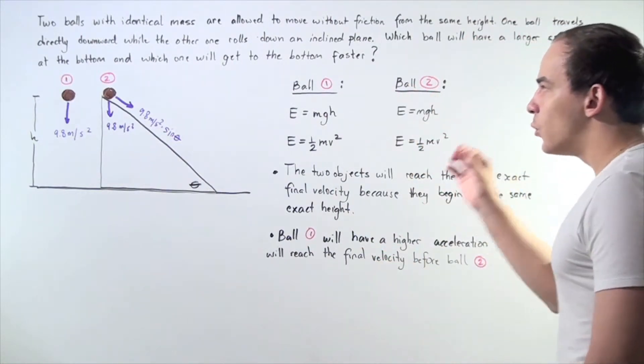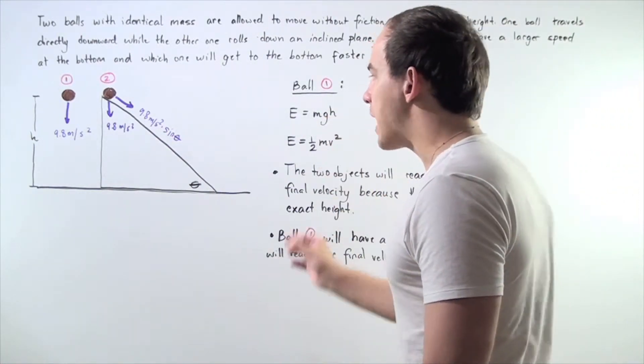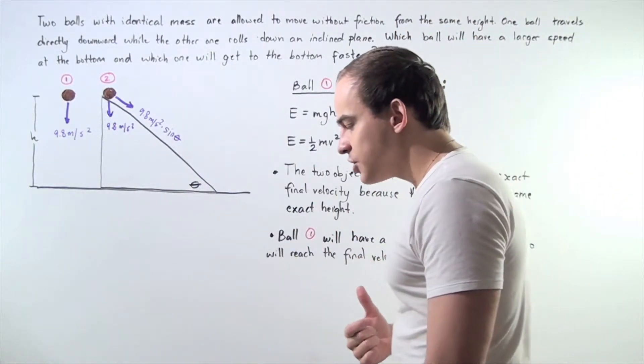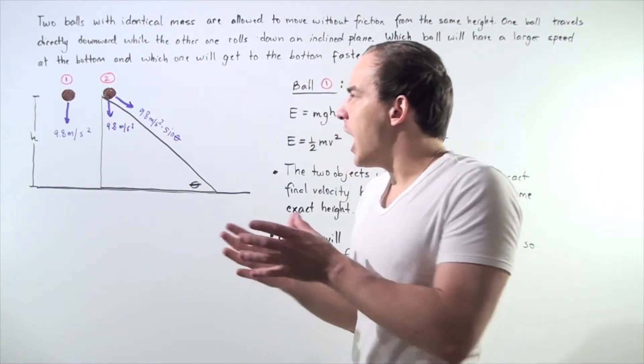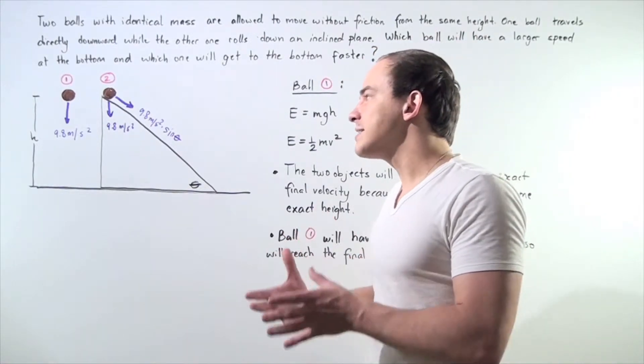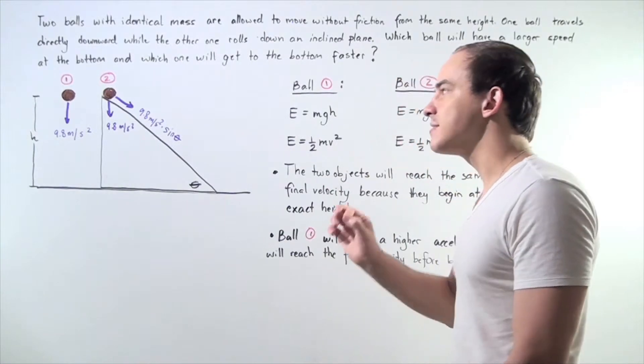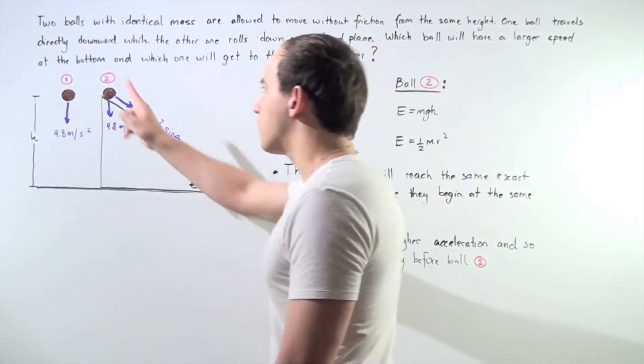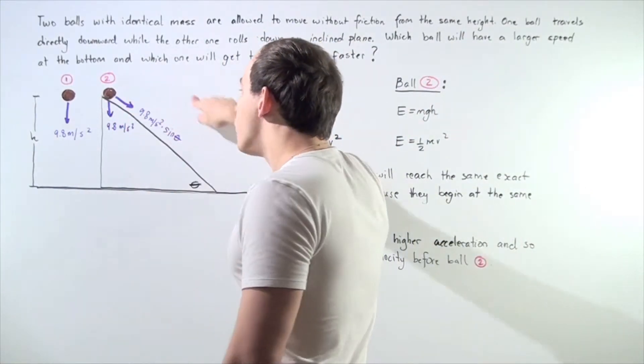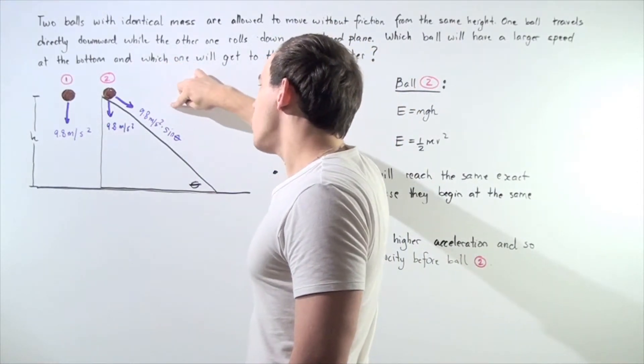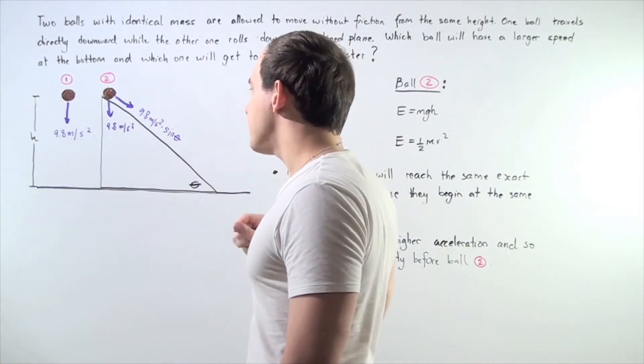Now, what about the second question? Which object will reach the ground first? Well, in order to answer that question, we have to think about which object has a higher acceleration. So, both of these objects have constant acceleration. But notice, object number two has a smaller acceleration because it's 9.8 meters per second squared times sine of the angle theta.